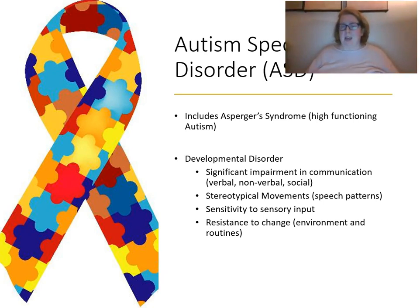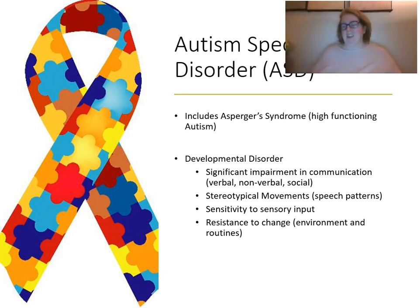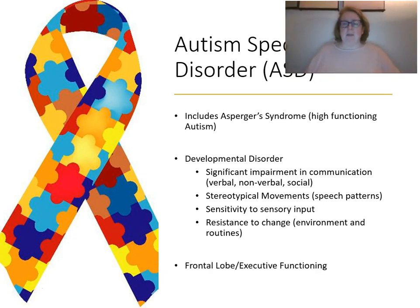Autism can also involve repetitive speech patterns. In higher-functioning students, we often see a hyper-focus on one specific topic or area. Students with autism spectrum disorder frequently have sensitivity to sensory input — such as clothing textures, tags, loud or sudden noises, or light. They also tend to have a resistance to change and appreciate predictable routines. We think autism may be a disorder of the frontal lobe or executive functioning, though there is still a lot to learn about what autism is.